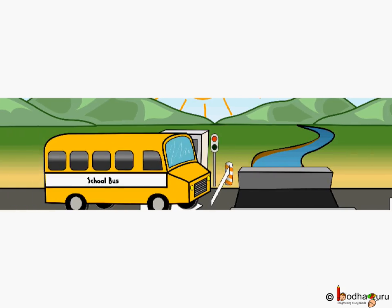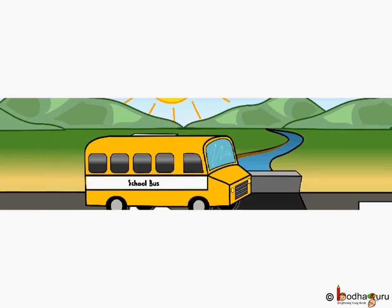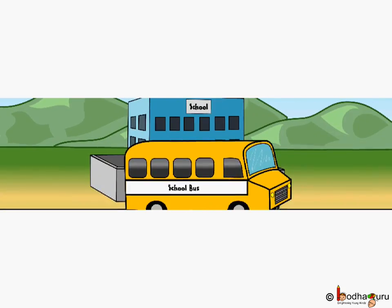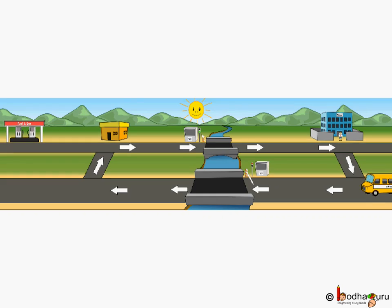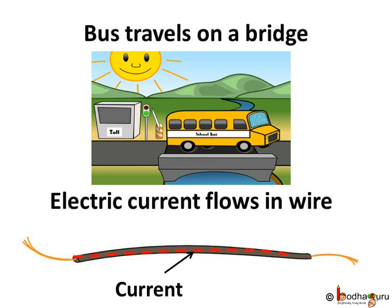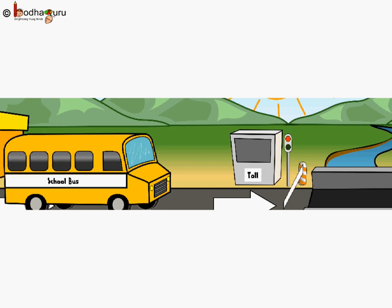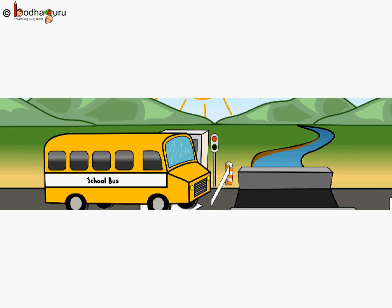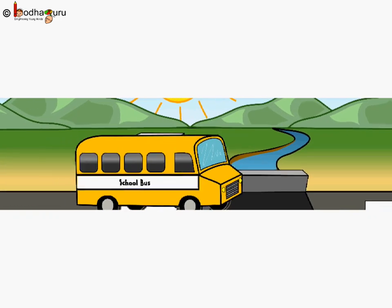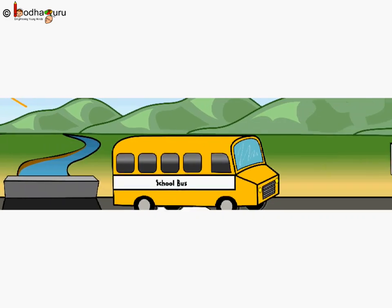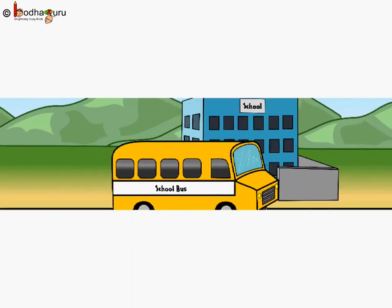Now we have a fair idea on how electricity works. In our previous class, we had taken the analogy of a bus travelling over a bridge. Let us revise that again. For going to school on the other side of the bridge, the bus picked Aman near his home. At the toll booth, after the payment, the gate opened and the bus was allowed to cross the one-way bridge.